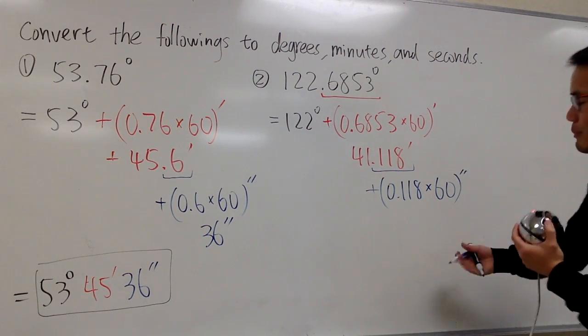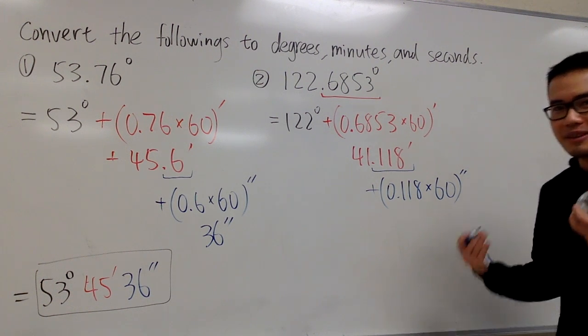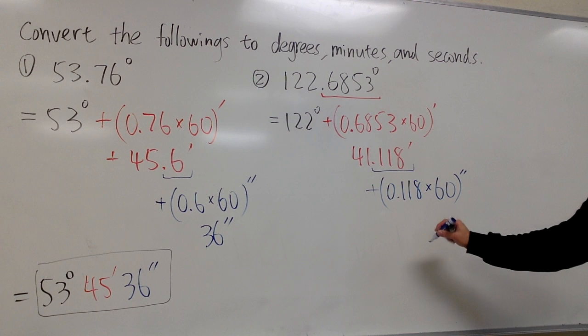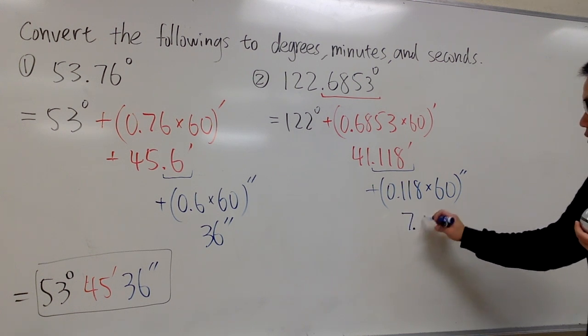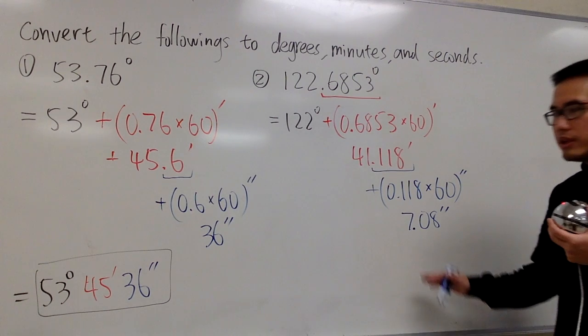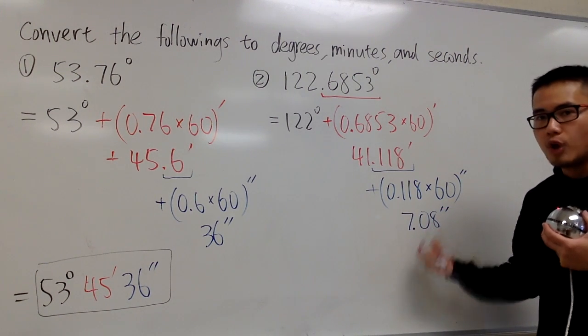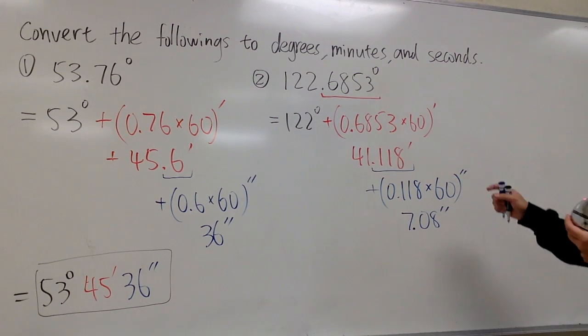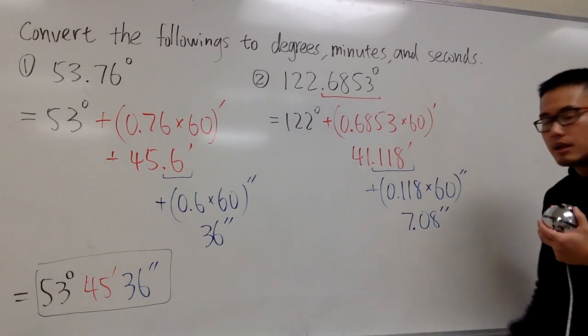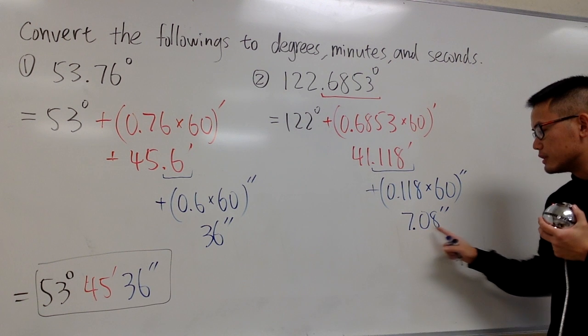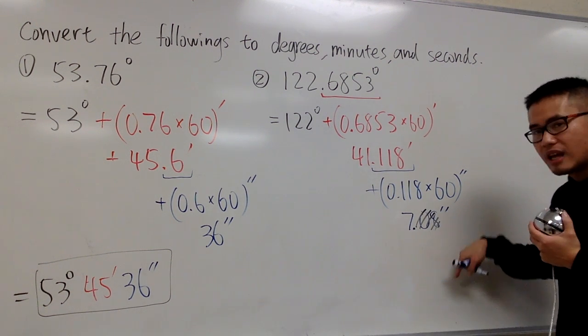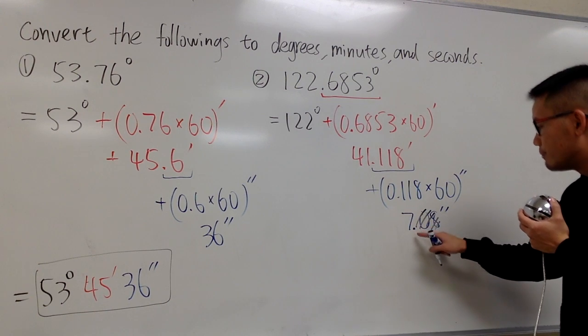60 seconds in one minute. If you don't remember this, just look at the clock, or just think about the times. So anyways, you multiply this out, you will end up with 7.08 seconds. And usually when we're doing this kind of thing, we want to just round it to the whole numbers. Especially when you are talking about degrees, minutes, and seconds. Once you multiply this out, if you still end up with decimal, we'll just ignore the decimal part and round it down. Because this is just 7.08.